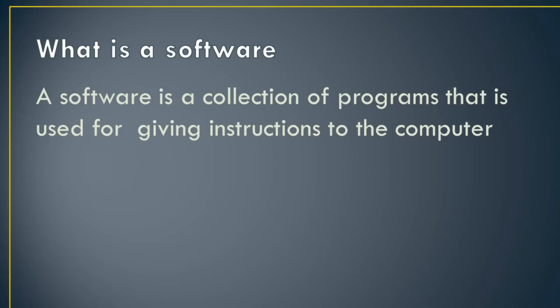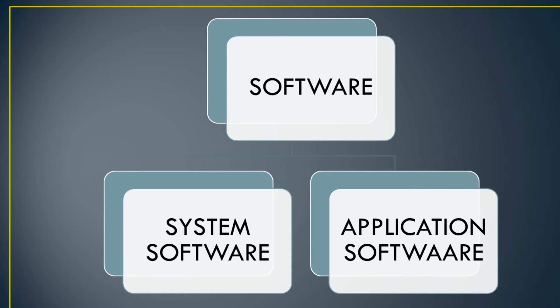Before we start, I want to explain what a software is. The basic definition of a software is: a software is a collection of programs that are used for giving instructions to the computer. Software can be categorized into two parts: system software, which is our operating system, and application software.